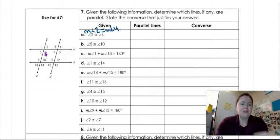So if 2 is congruent to 4, does that make some lines parallel? And then we have to figure out which lines are parallel, because we've got four lines here, so we could have these two parallel. So it could be C and D or A and B.